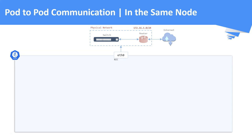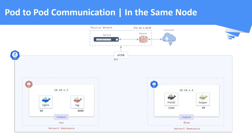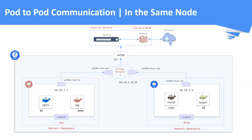Whether you deploy the pod on the same node or a different node in the cluster, each pod on a node has its own network namespace and its own IP address. Both pods are connected to the same bridge network, so communication between these pods happens through the bridge network. When data is sent from the red pod to the blue pod, the red pod's traffic flows from the pod's virtual interface veth0-red-in to the virtual bridge using veth0-red-out. From there, traffic is forwarded to the blue pod using its virtual interfaces veth0-blue-in and veth0-blue-out respectively.